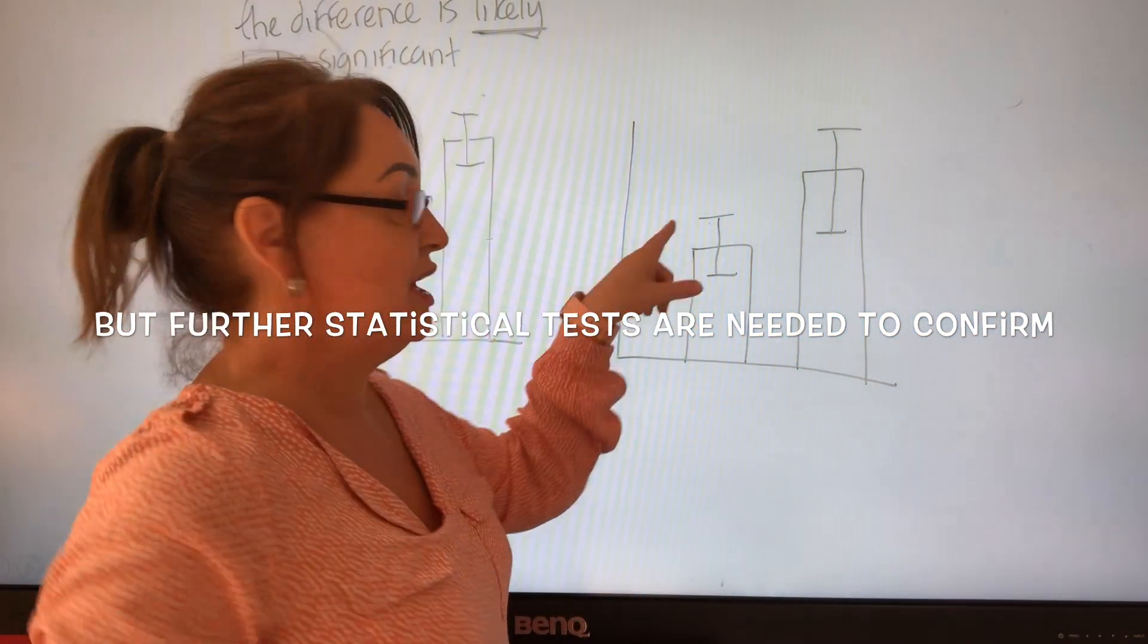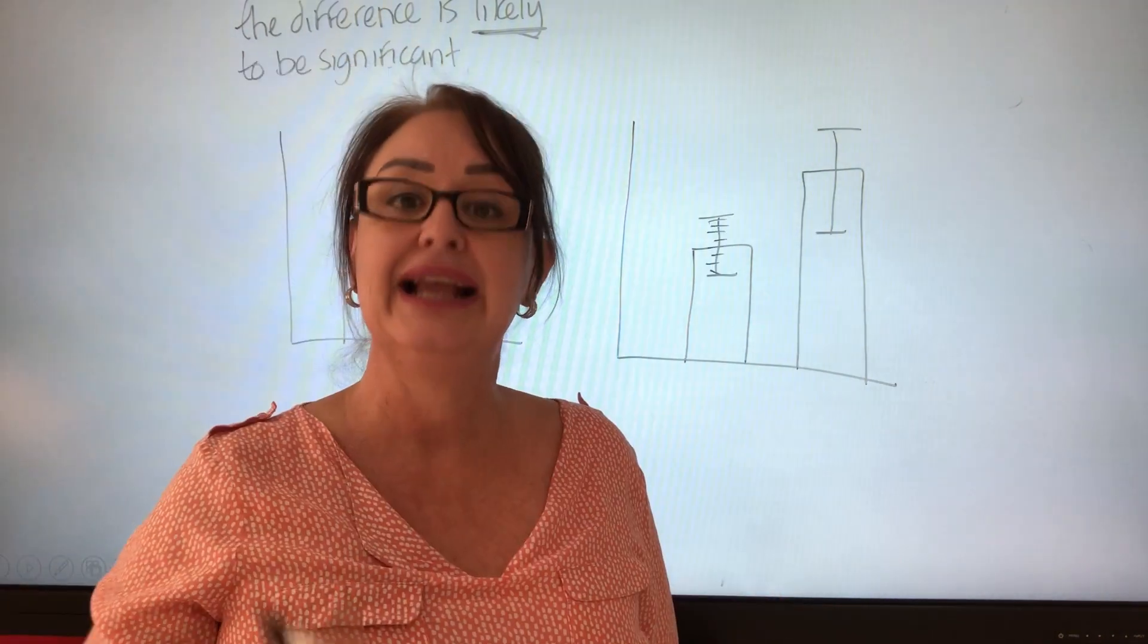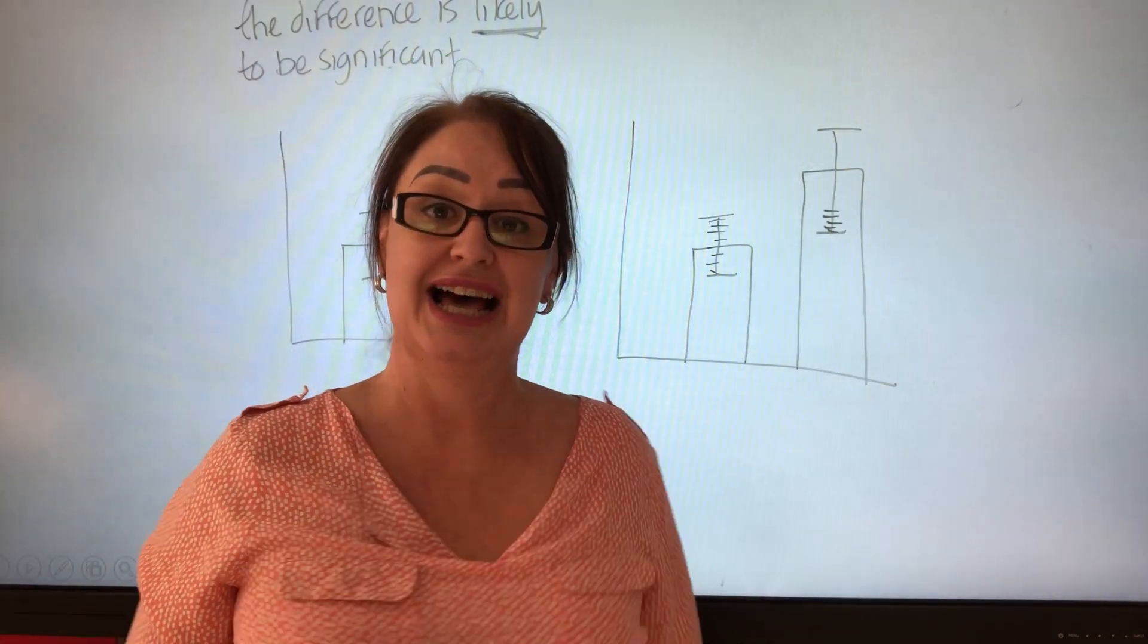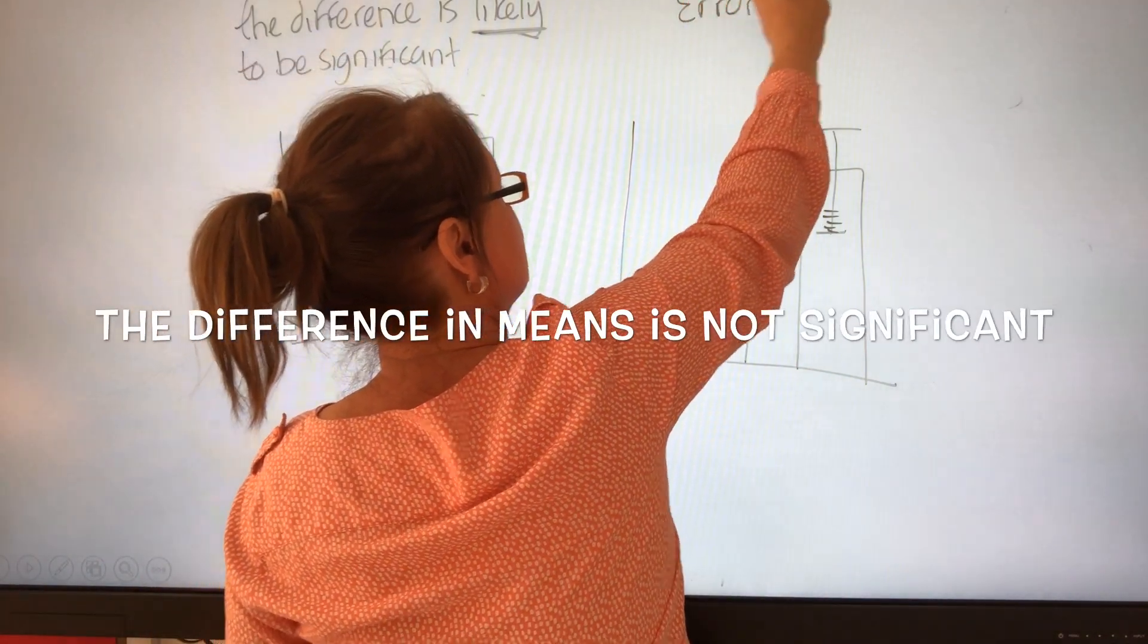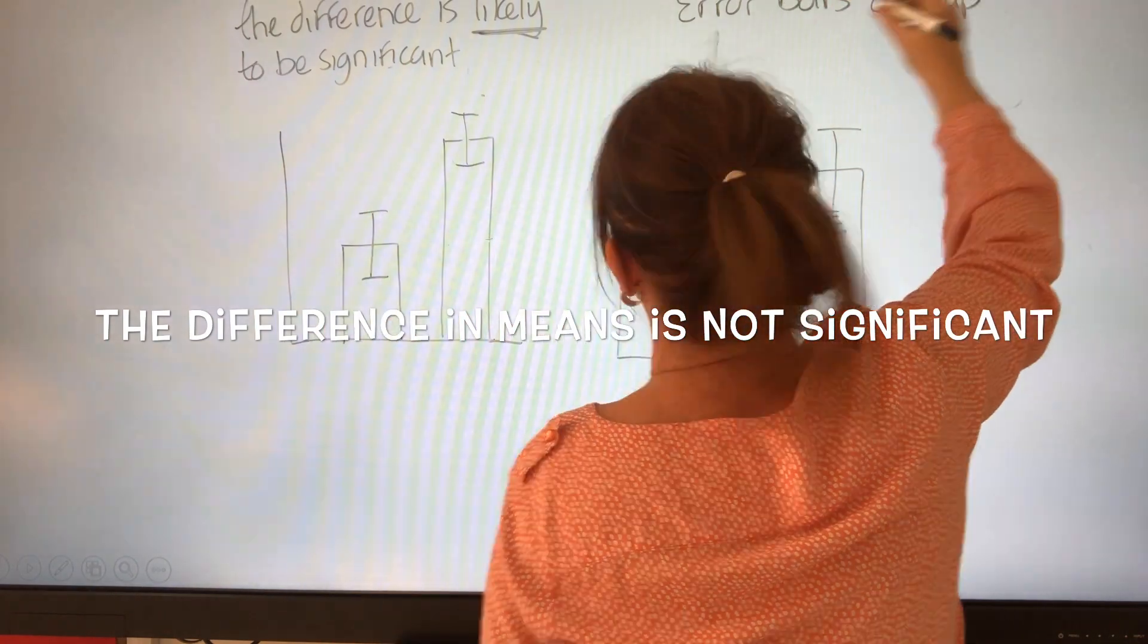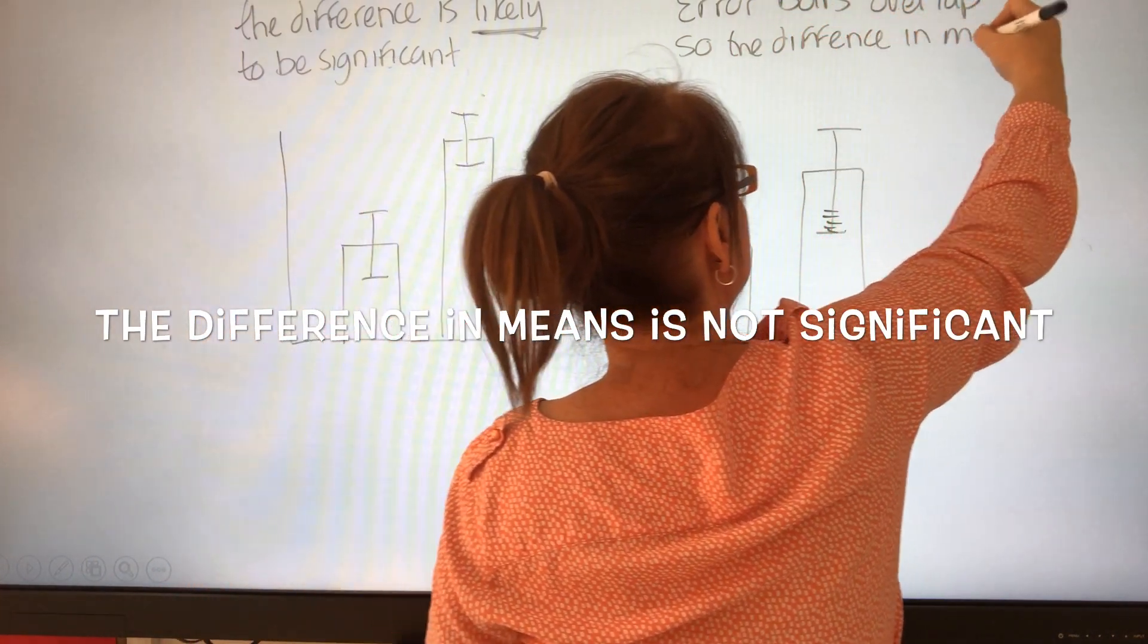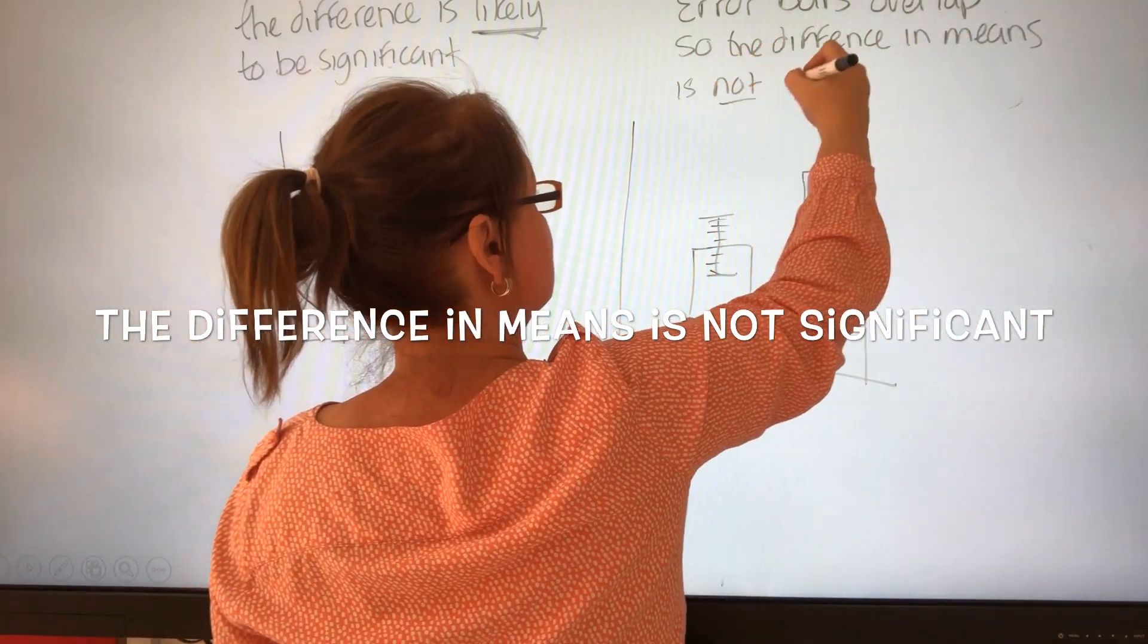If we look at an example where the error bars clearly do overlap, it means some of the data collected here is the same or within the same range as some of the data collected there. So what we would say is that the error bars overlap, so the difference in mean is not significant.